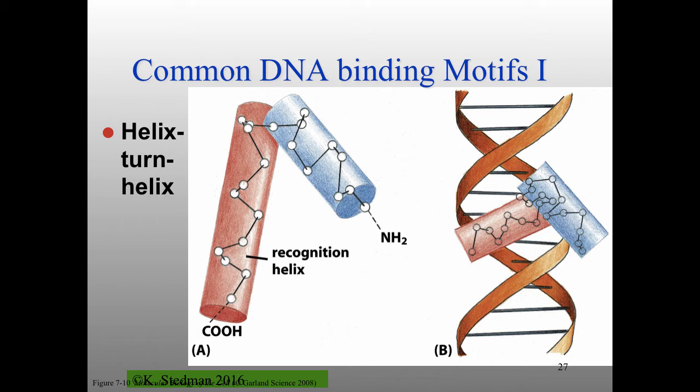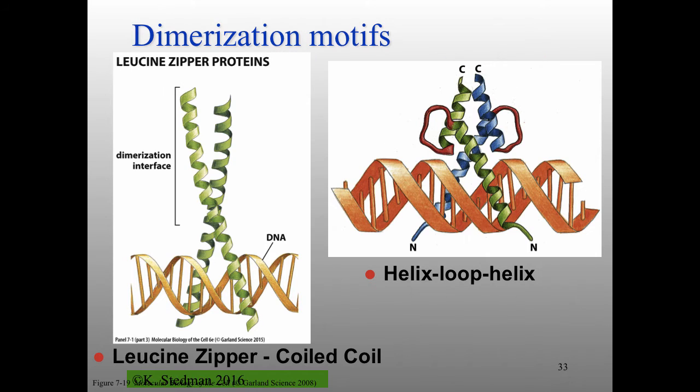The homeodomain looks a bit like a helix-turn-helix but is a full domain with three alpha helices folding into a specific structure, and it's specific to eukaryotes. So: helix-turn-helix is in bacteria; homeodomain is in eukaryotes.